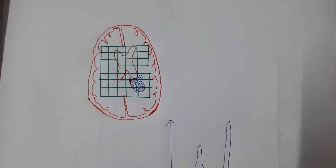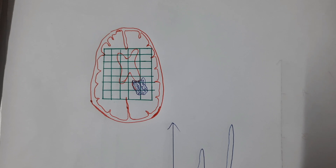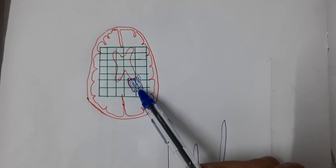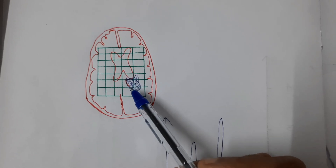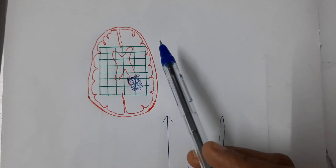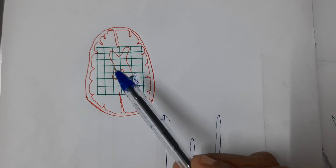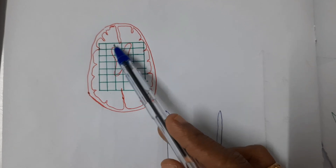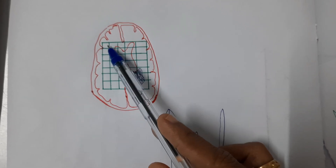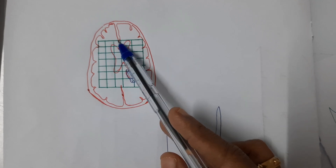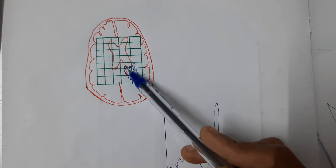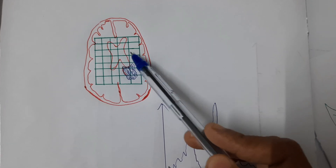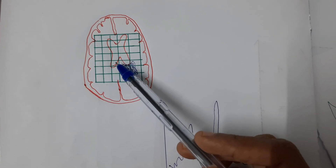Here you can see a slice of the brain tissue. The part shown in blue color represents a pathology within the brain tissue. When we perform MR spectroscopy, this matrix will be placed within the brain tissue. This matrix consists of a number of voxels. In each of the voxels, you can place a cursor and find out the brain metabolite concentration in that region. This represents normal brain tissue and this is abnormal brain tissue.